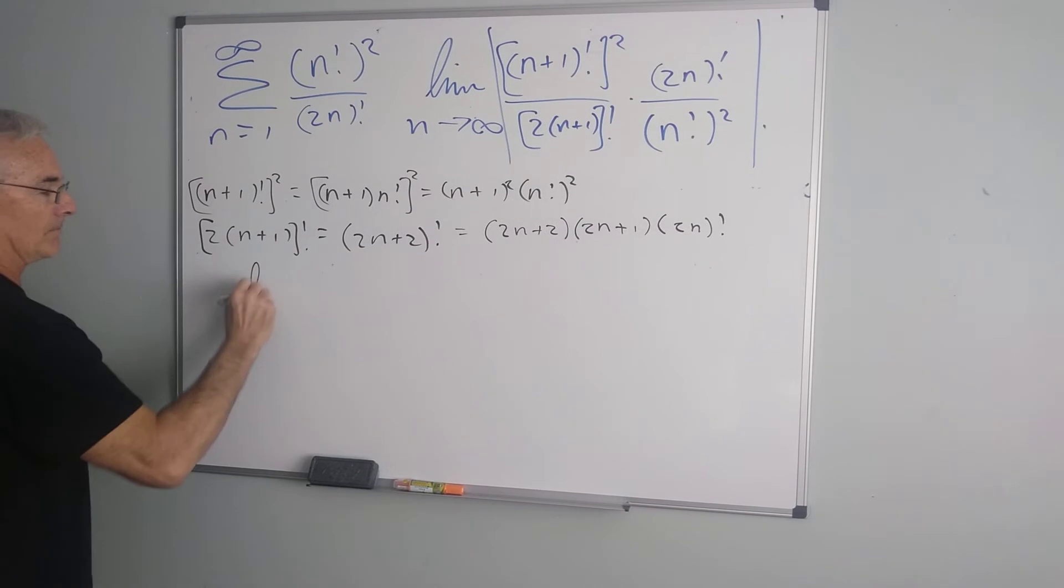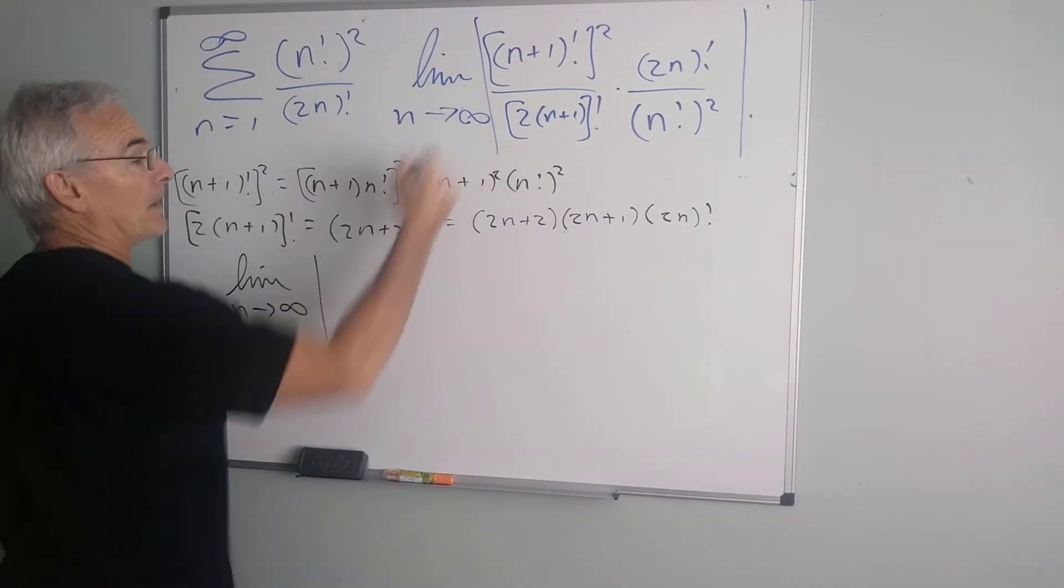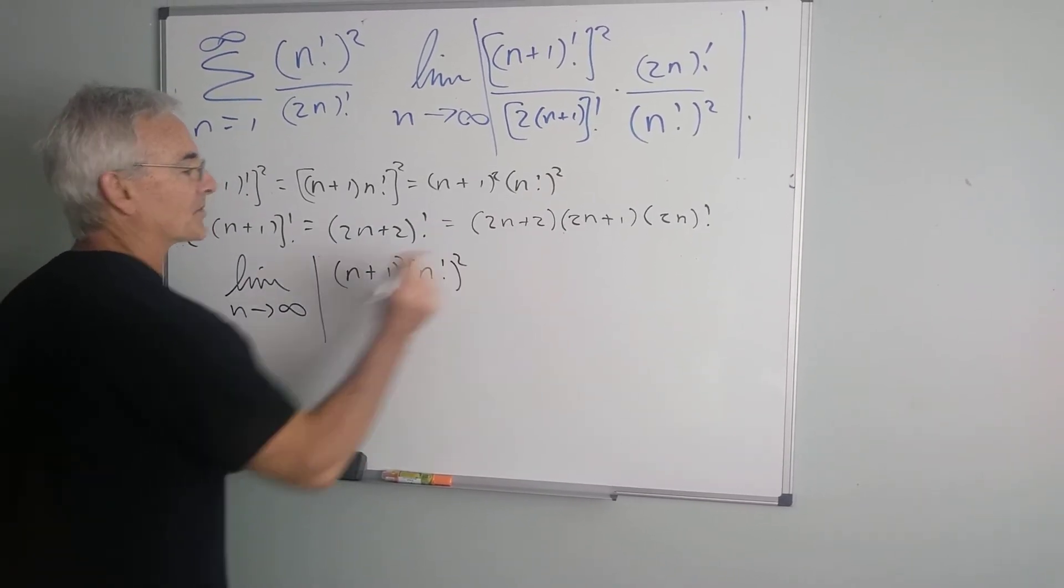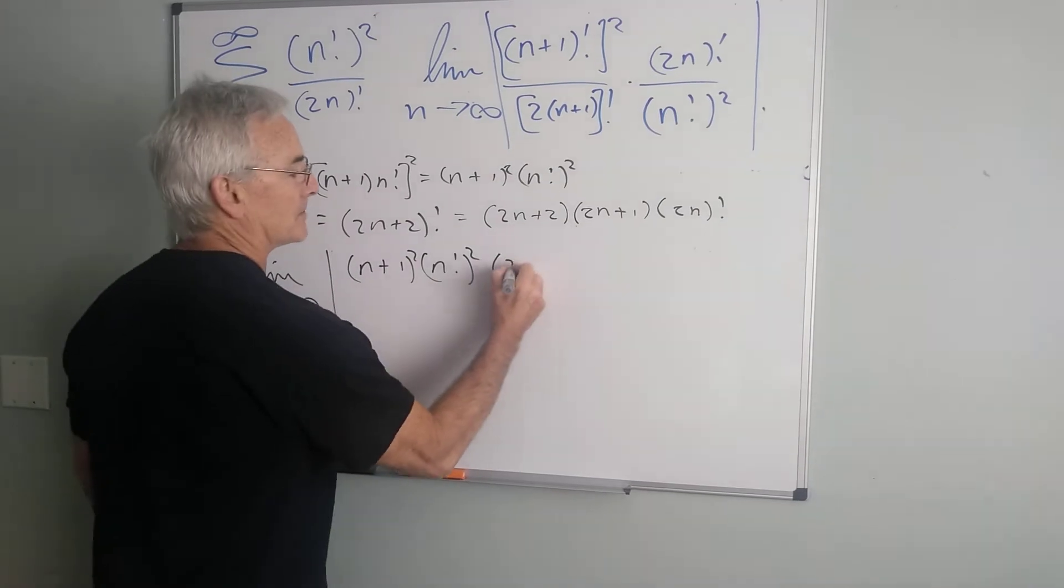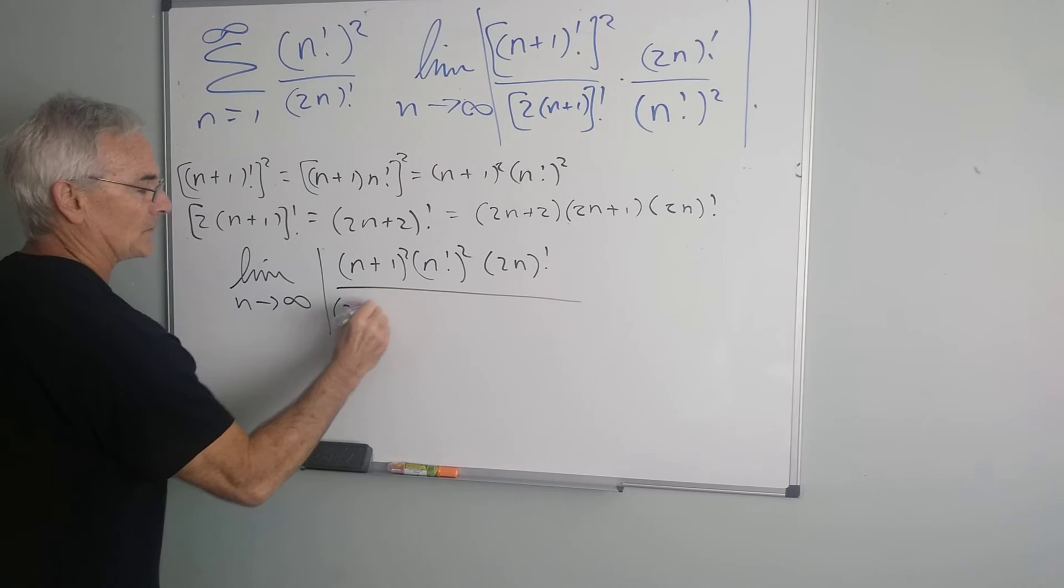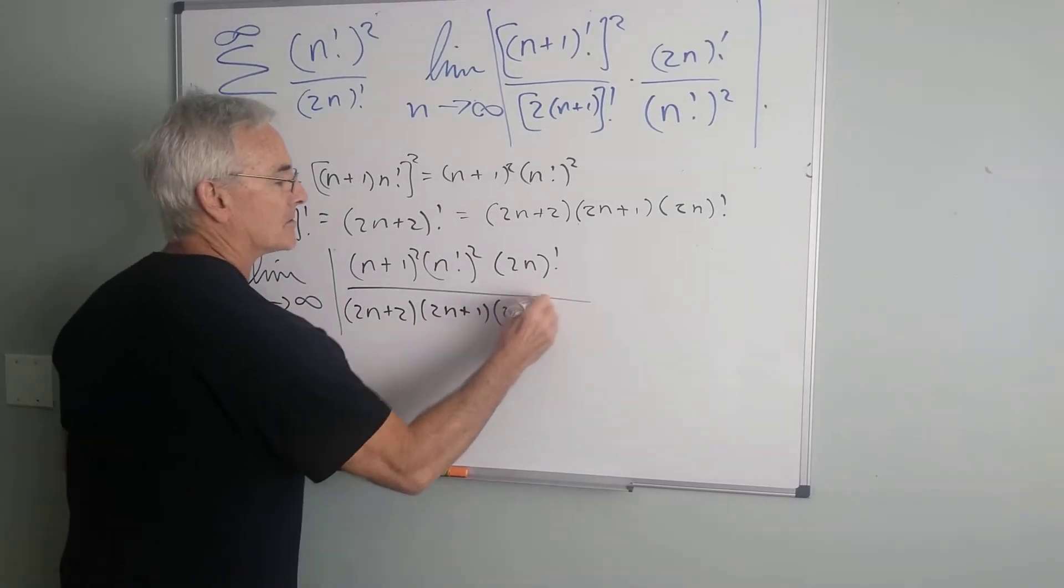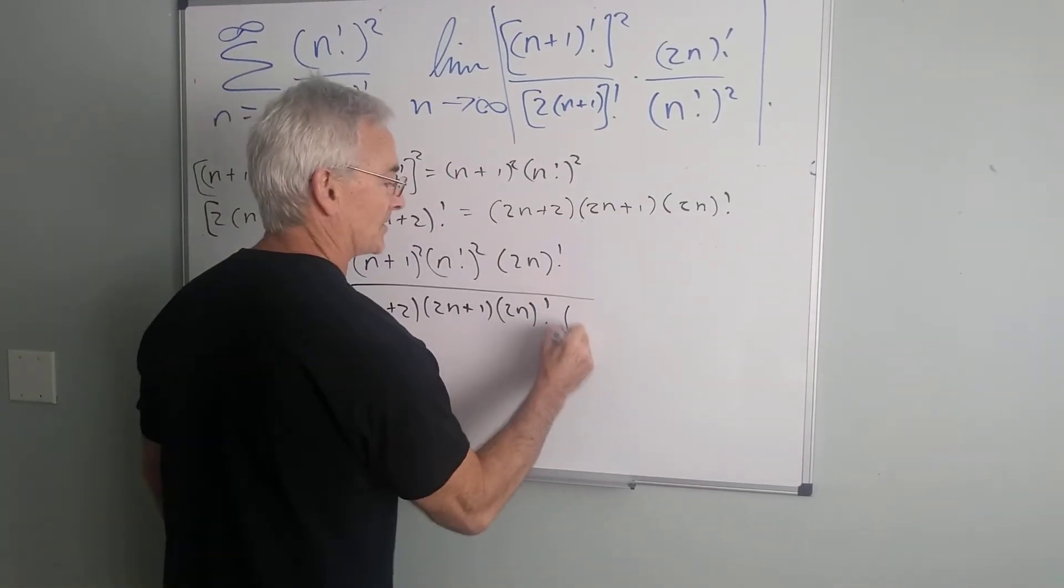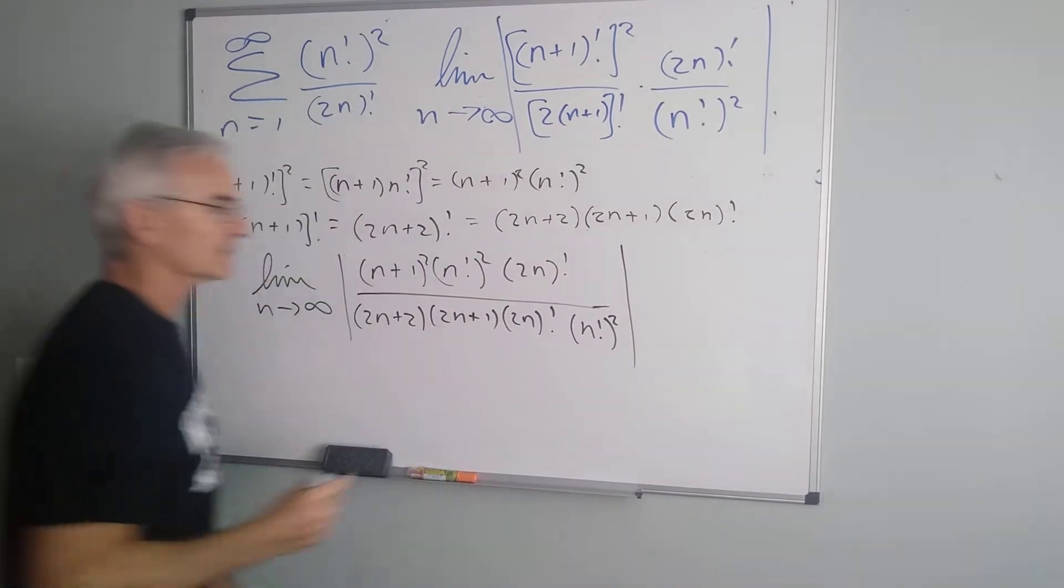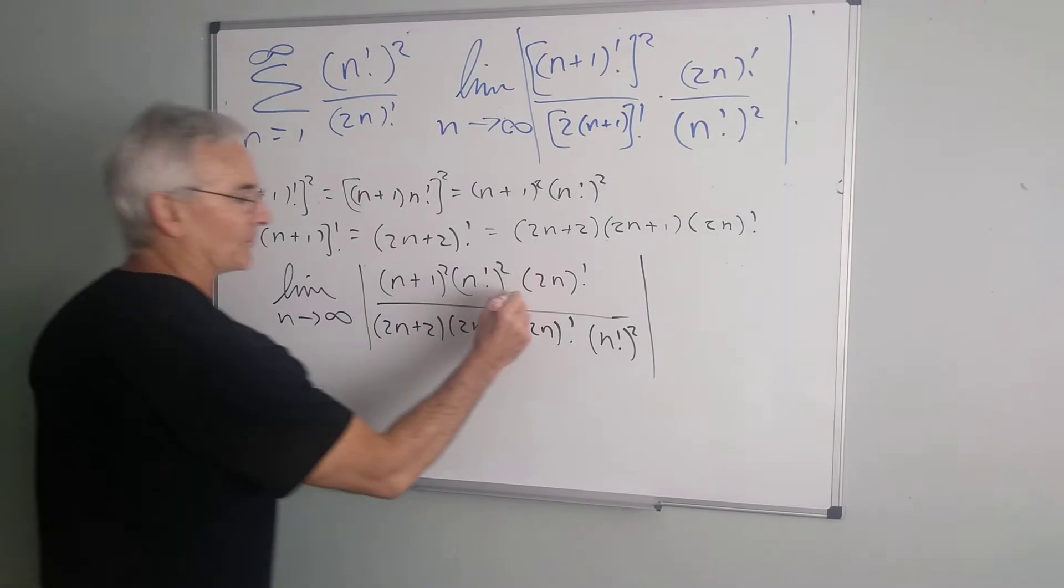now when we expand this limit, we're going to see that we get something like this. My numerator is going to be n plus 1 squared, n factorial squared, times 2n, quantity factorial. My denominator, 2n plus 2, 2n plus 1, 2n factorial, times this term, n factorial squared.